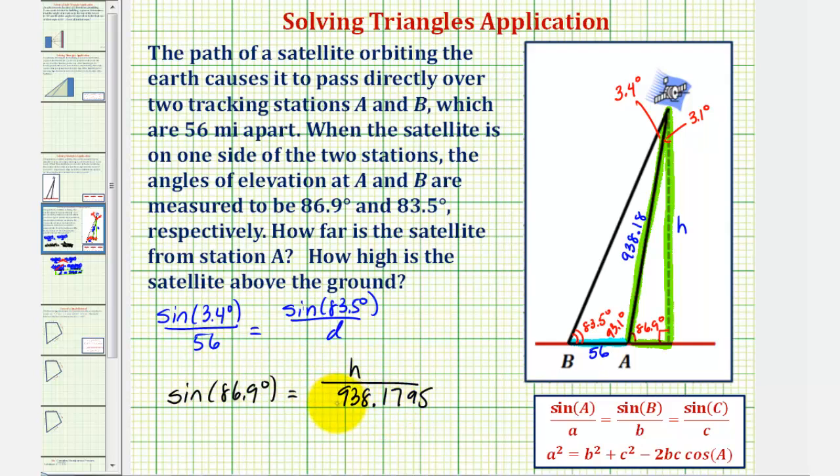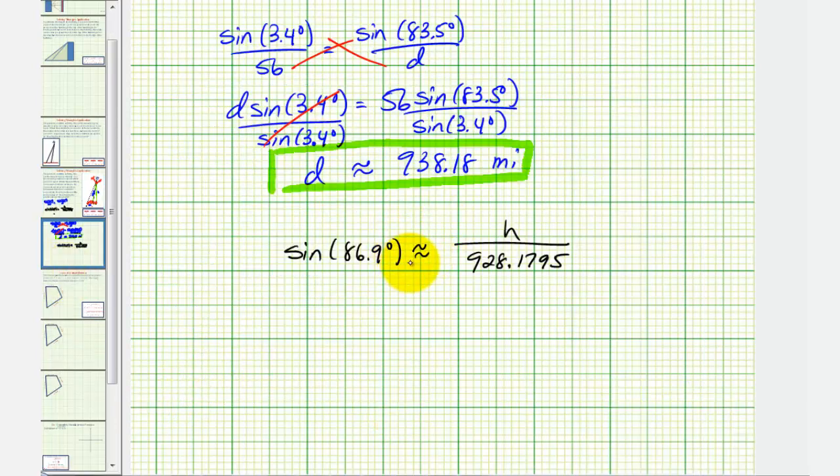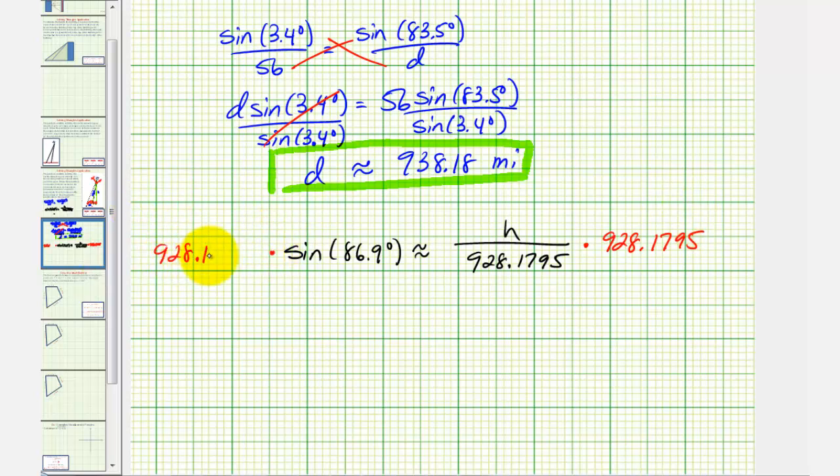And now we'll solve this equation for H in order to find how high the satellite is from the ground. And again, let's do this on the next slide. Notice how I did change this to an approximation sign, because this is a rounded value. Now to solve for H, we would multiply both sides of the equation by 938.1795. Notice how on the right, this simplifies nicely to H.